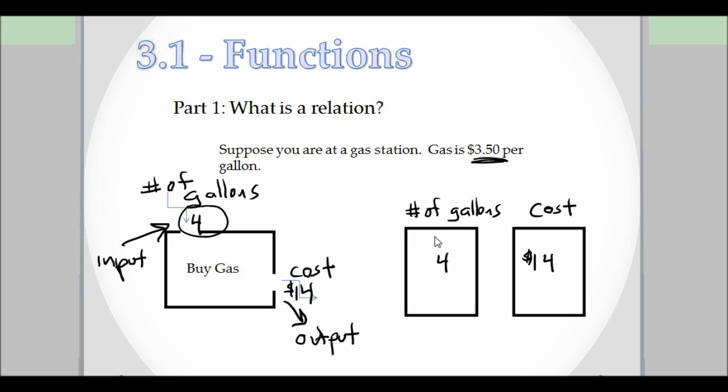Let's try another one. Say you buy two and a half gallons. So how much would that cost if you bought two and a half gallons? Two and a half gallons at $3.50 a gallon gives us $8.75.